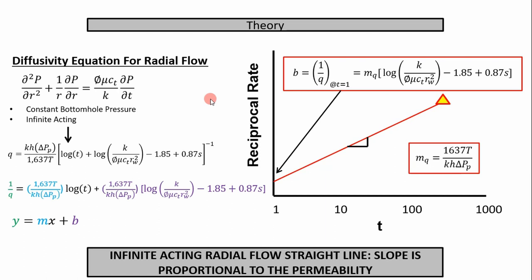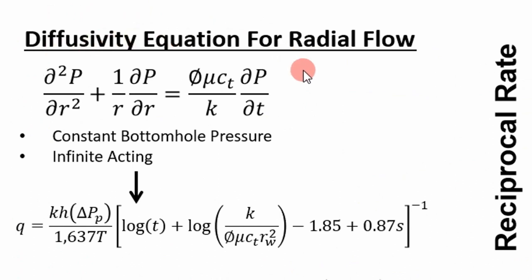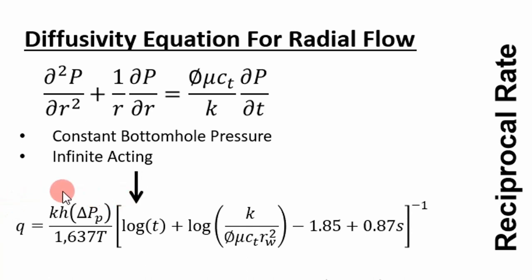Before we dig into the analysis, it's important to understand where the equations come from. One of the most fundamental equations in petroleum engineering is the diffusivity equation — a partial differential equation with a time derivative and a second-order spatial derivative. You need two boundary conditions and an initial condition to solve it. Assuming constant bottom hole pressure in the infinite acting region, you can get an approximate solution for infinite acting radial flow.